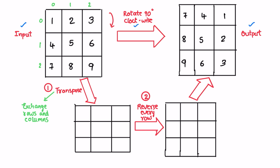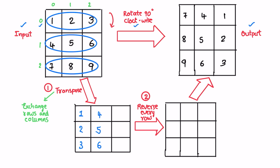To form this output, first you have to perform the transpose of the original matrix. To transpose the input matrix, you interchange every column with its row. So the elements inside the first row — 1, 2, 3 — become the first column. Those row elements are now displayed as columns. The second row becomes the second column, and the third row becomes the third column.